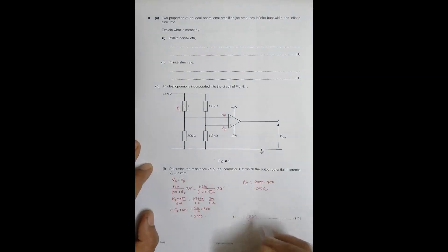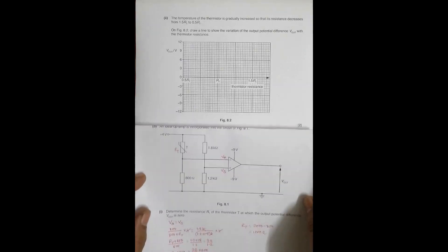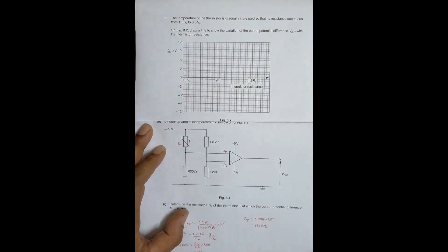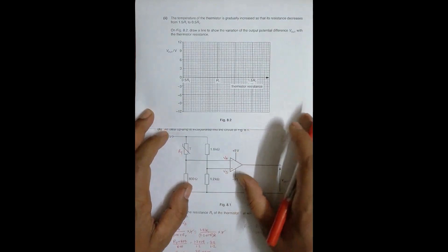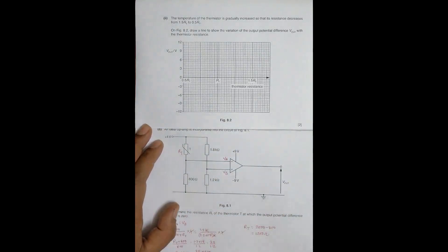In the next part, the temperature of the thermistor is gradually increased so that the resistance decreases from 1.5 RT to 0.5 RT. We need to draw a graph showing the variation of output potential difference Vout with thermistor resistance.